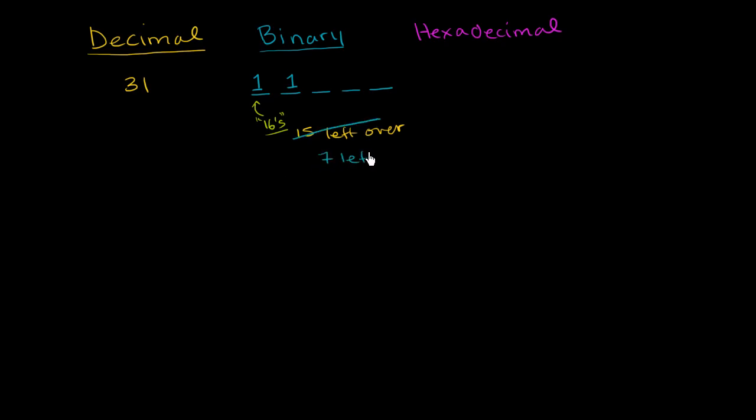And so 8 doesn't go into it. Let's go to the 4s. You're going to have 1, 4. And then if you have that 1, 4, you now have 3 left over. And then we could take out 1, 2. So then we'll have 1 left. And that 1, we can just represent it as 1 in the 1s place. So it's literally 1, 1, 1, 1, 1 in binary.